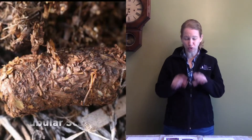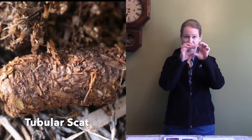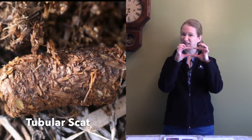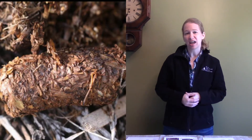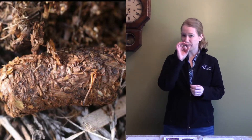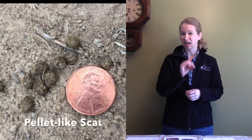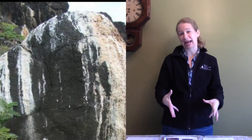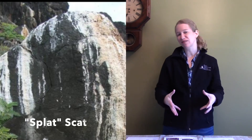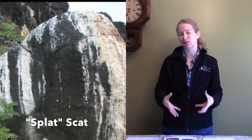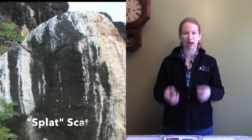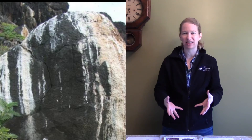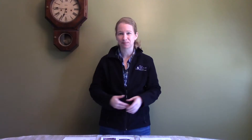It can be tubular, so kind of like a sausage. It could also be more pellet-like, or it could just look like a big old splat — what you think of mostly for birds, that white splat that you sometimes see on the sidewalk.